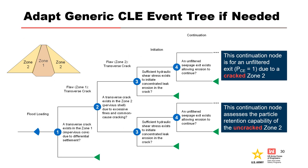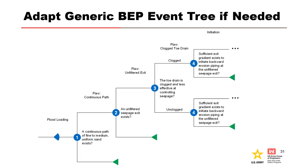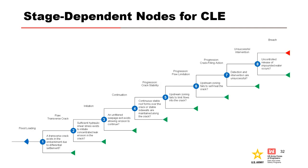Generic event trees will be presented in this training course, and it may be necessary to adapt or decompose the generic event tree to project-specific conditions. In this example of a zoned embankment, the likelihood of zone 2 cracking is being assessed — the outcome affects both initiation, because of effective length and hydraulic gradient, as well as the exit condition. To assess the performance of seepage control features like toe drains, a node can be added to assess the likelihood of poor performance. In this example, the generic concentrated leak erosion event tree is shown — consider which nodes are functions of stage.